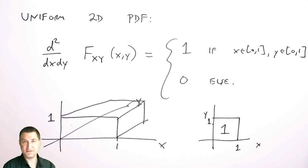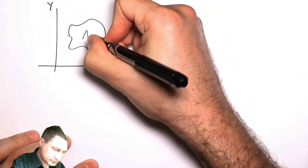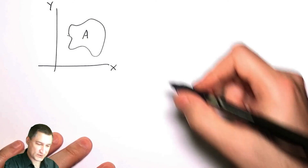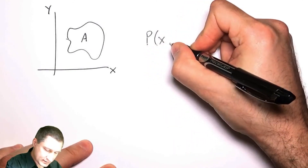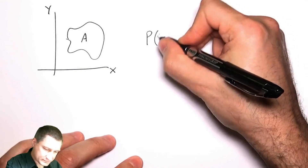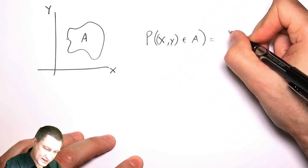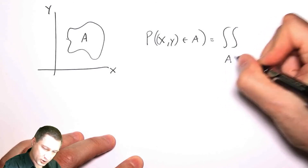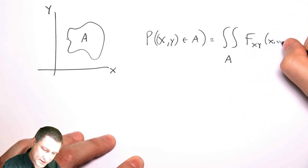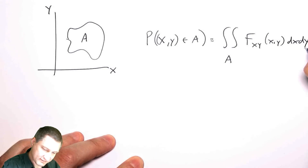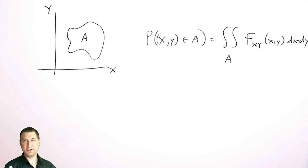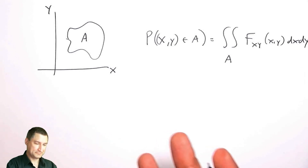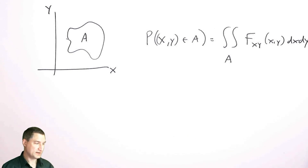Just like for one-dimensional integrals, we do 2D integrals over this PDF to get probabilities of certain events. If I want to compute the probability of some event in the x-y plane, the probability that the point I get falls inside some region is just the double integral over that region of the two-dimensional PDF. Hopefully our regions won't be too ugly and the integrals won't be too bad.